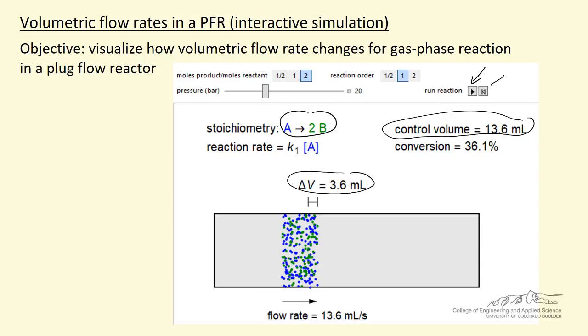This is the reset to start over and I can change the order of the reaction. I'm looking at first order here, half order, second order and that's going to affect how much conversion takes place in the reactor.